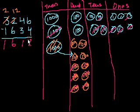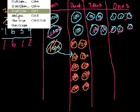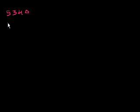Let's do the other problems. I'll skip around a little bit, because I think the important thing is that you get the big picture. After you get the big picture, the rest of the problems are really just a little bit of practice. So let's do 5,340 minus 6, and now I'm going to do it Sal's way.